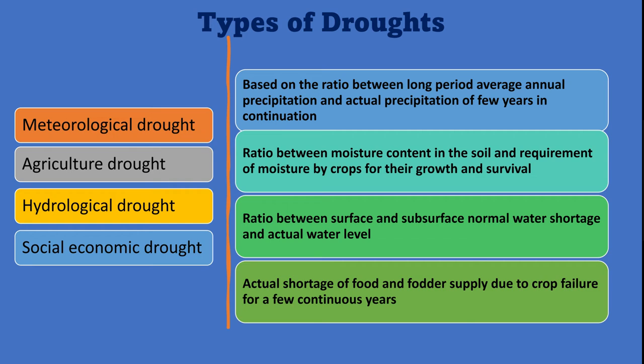Meteorological drought is a prolonged period of less than the national average annual precipitation, resulting in dry conditions. This drought type is directly related to the precipitation factor. Agricultural drought is a prolonged period of shortage of soil moisture content, resulting in crop failure and low crop yields.